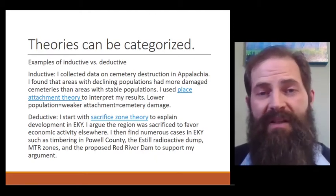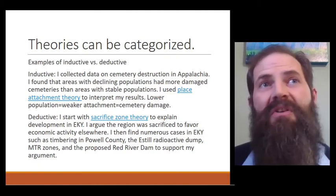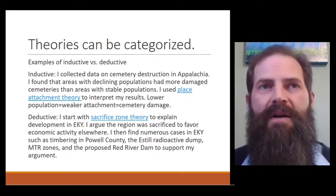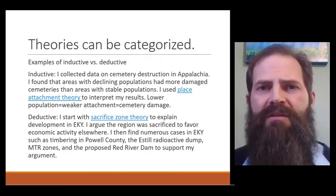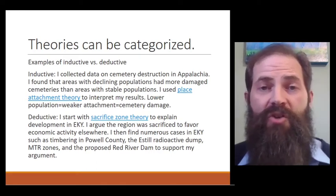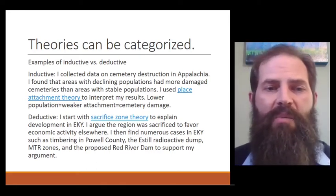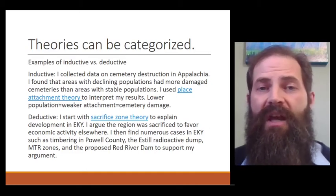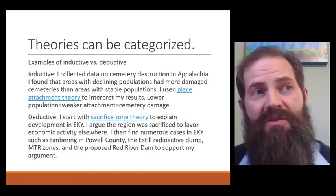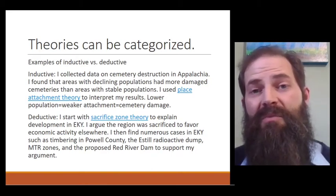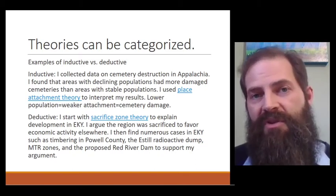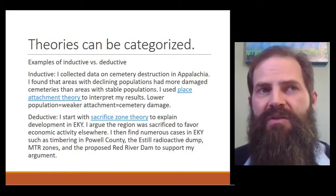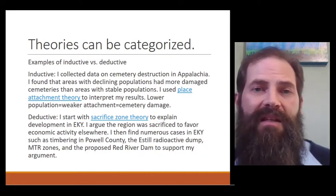That's where I found the theory of place attachment, which could be used as a structural functionalist or critical theory depending on its application, to understand how groups of people experience greater or lesser attachment to a particular place. I used this theory to interpret what my results meant at the very end. I pointed out that communities with lower or shrinking populations generally had weaker place attachment and therefore typically had the cemeteries in the worst condition—and it held true. That paper was published in the Journal of Appalachian Studies. It's a great example of using inductive theory: start by collecting your data and ideas, then end with theory.